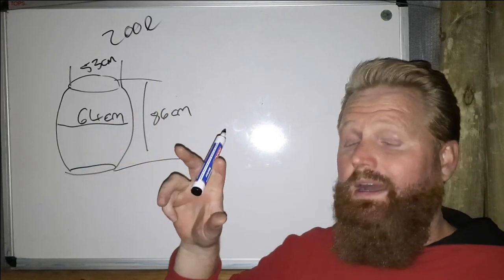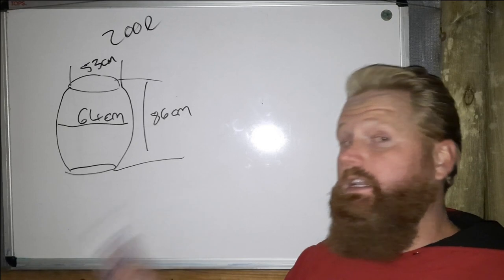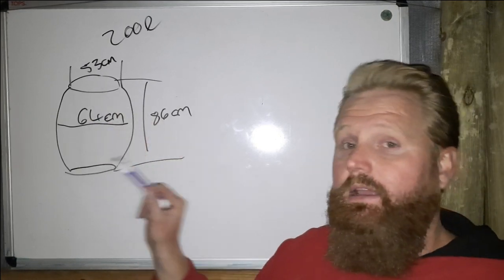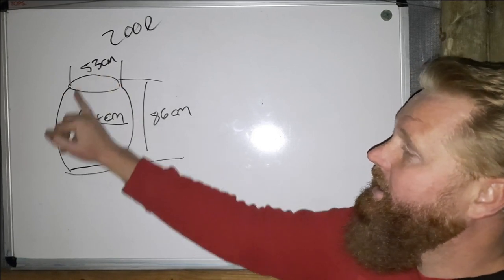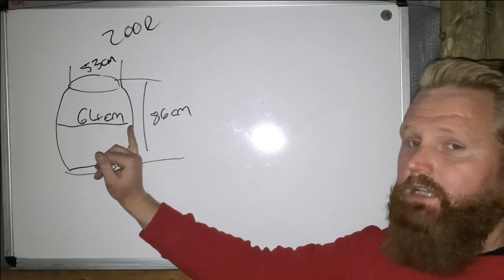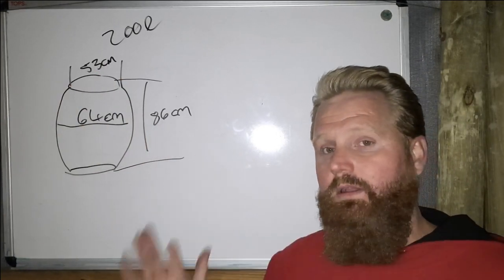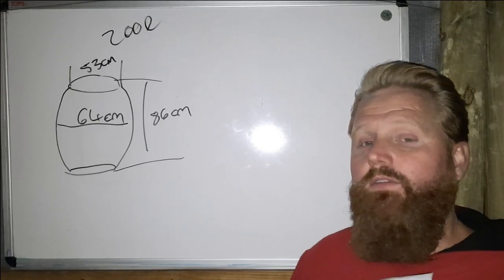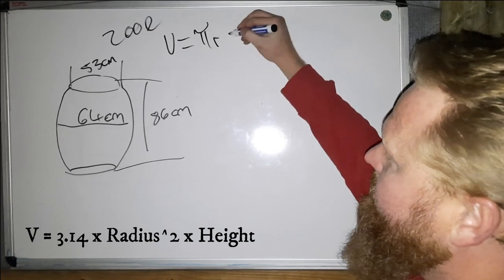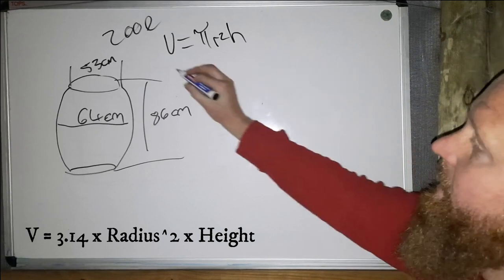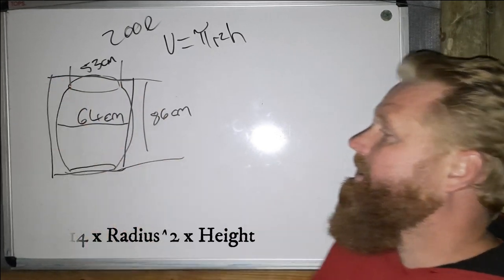For this go-around, what I did is turn the barrel into a cylinder. Instead of calculating at 53 centimeters I calculated everything at 64 centimeters. Using the following formula we can calculate the total volume that cylinder will occupy. The formula for the volume of a cylinder is: volume equals pi times radius squared times height. That gives you the total volume of a straight cylinder.